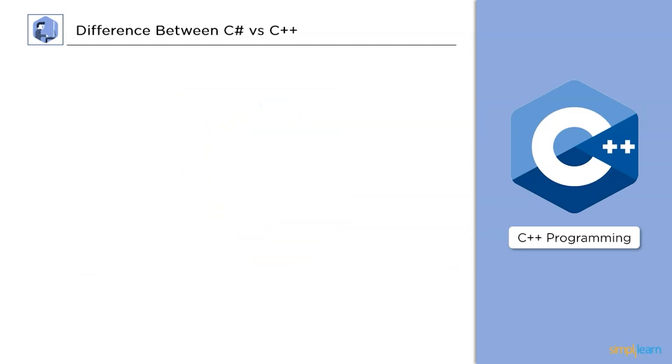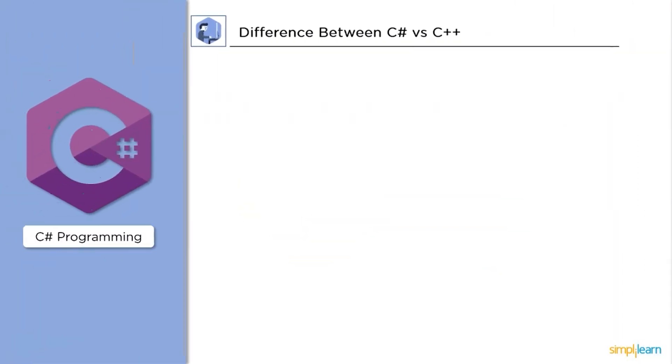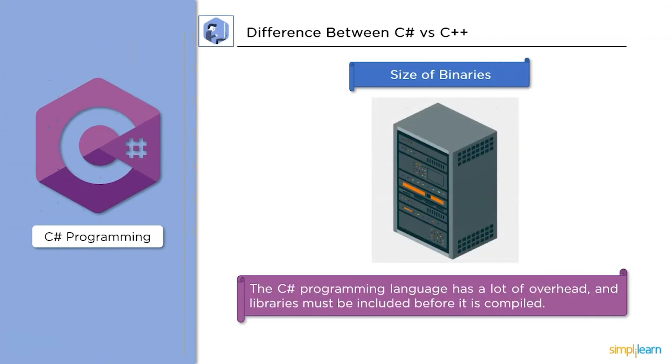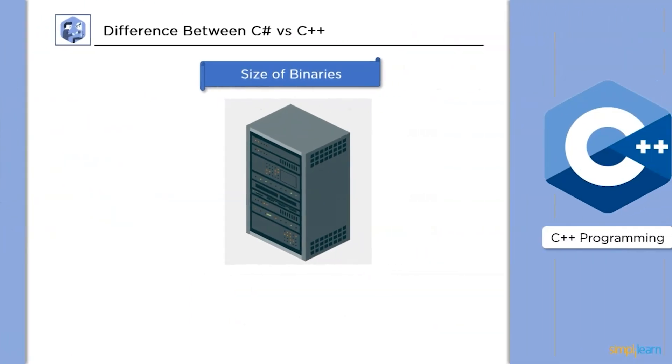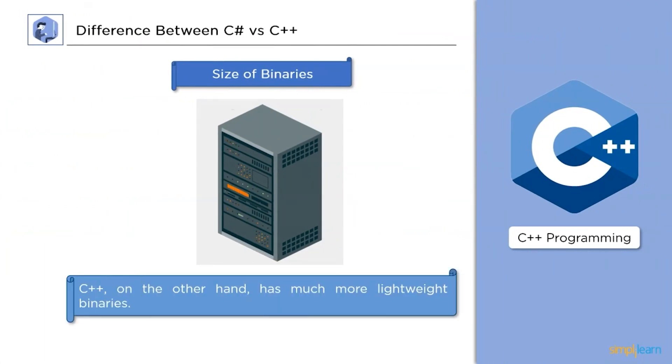At last, size of binaries. C Sharp is a programming language that has lots of overhead and libraries must be included before it is compiled. On the other hand, C++ has much more lightweight binaries.